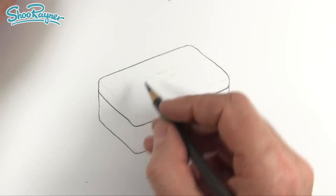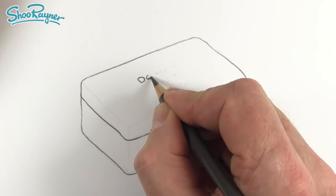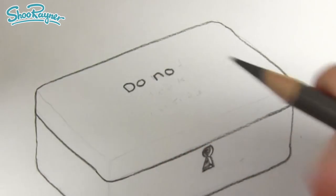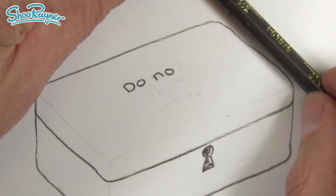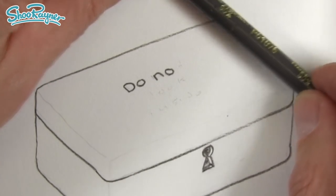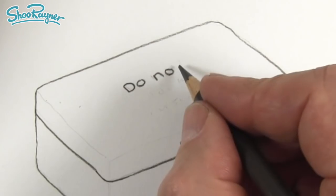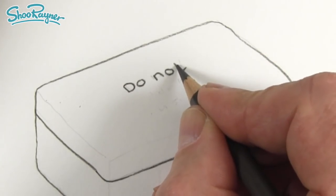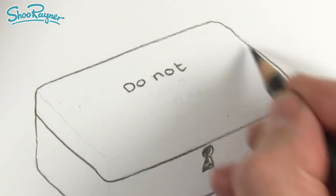And we want to write on the top, do not. Now look, to get this angle, to get it to look like it's actually lying on there, you need to get that angle. So the T needs to, you don't want to do it vertically. You want to do this T at an angle that's parallel to that.